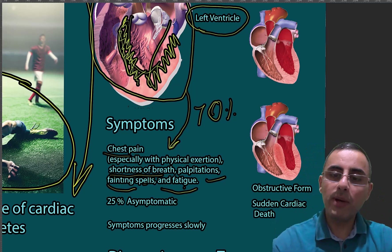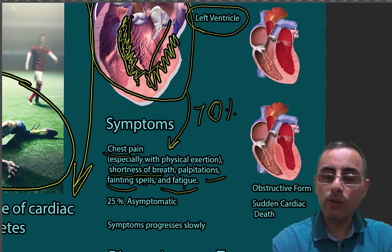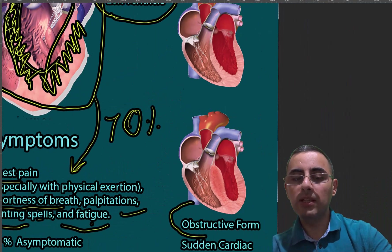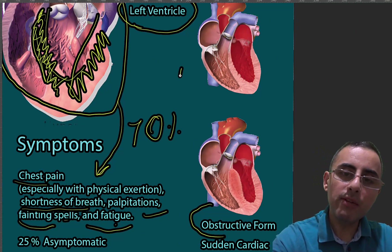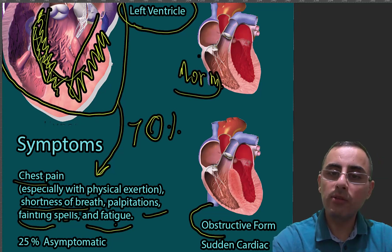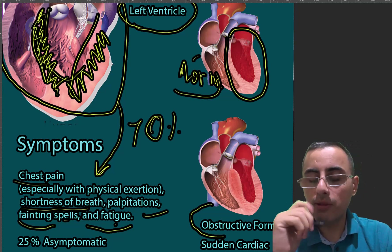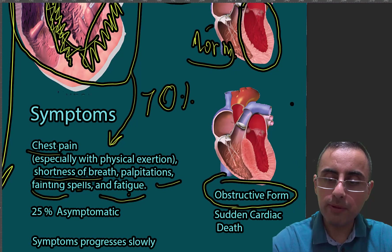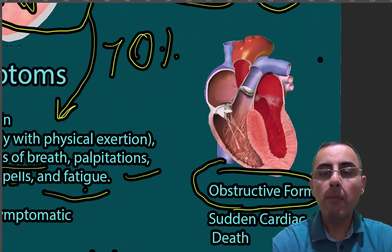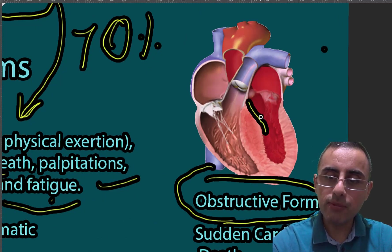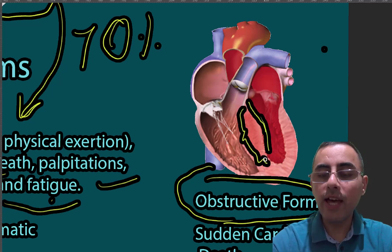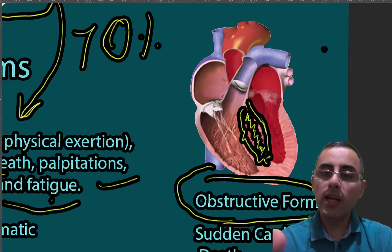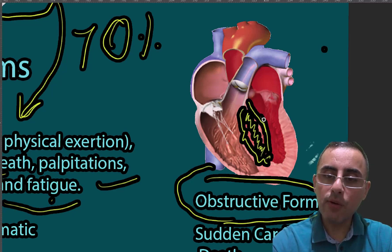We differentiate two main forms of hypertrophic cardiomyopathy: the obstructive form and the non-obstructive form. The non-obstructive form is much milder. In the obstructive form, the most important feature is thickening of the septum. This thickened septum acts like a rock in a river, obstructing blood flow.